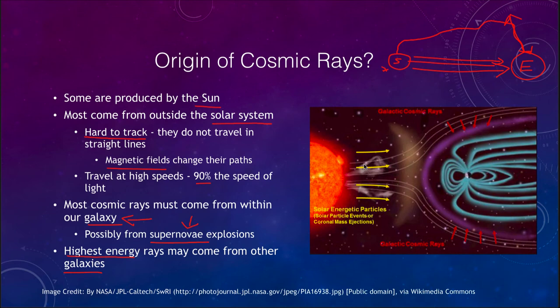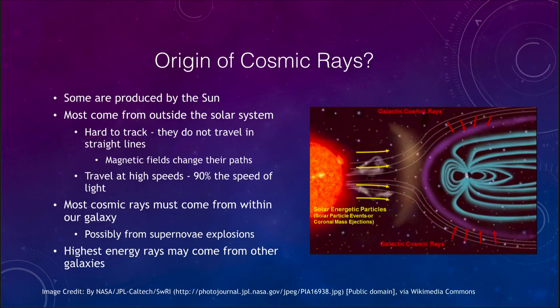Looking at the image here, some cosmic rays come from the sun — perhaps from a coronal mass ejection — with charged particles striking the earth's magnetic field. There are also galactic cosmic rays coming from all other directions, and those very high energy ones actually coming from other galaxies, possibly from even more energetic events.